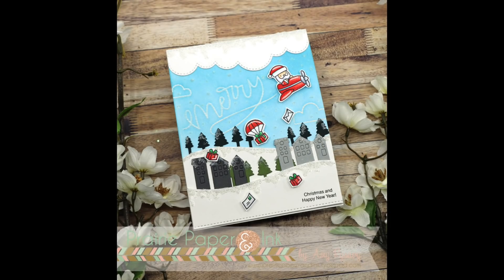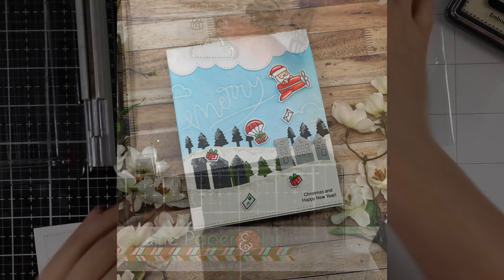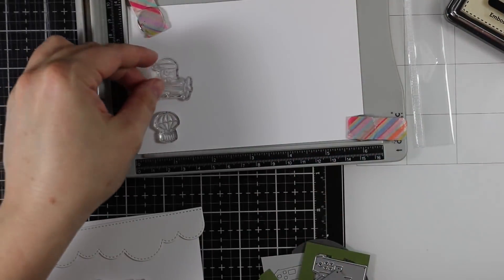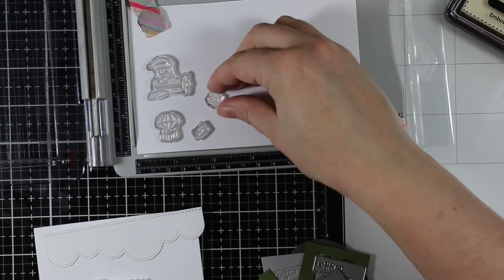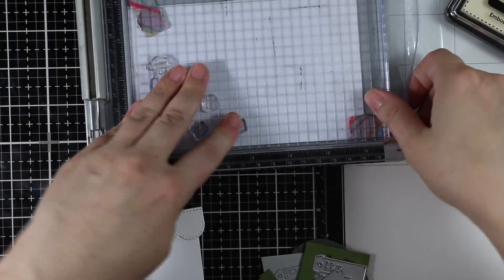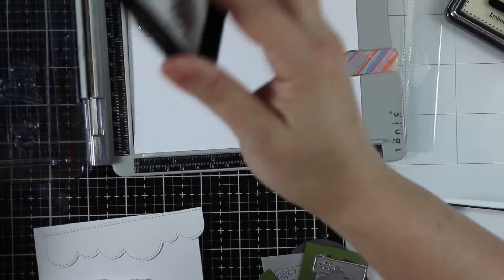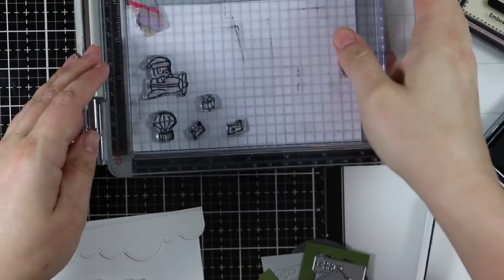Hello everyone, Amy here with Prairie Paper and Ink. I'm back with another Stamp Timber exclusive with Mama Elephant. This is the Merry Mail stamp set, only available while supplies last through the month of Stamp Timber. Some limited edition sets have already sold out.